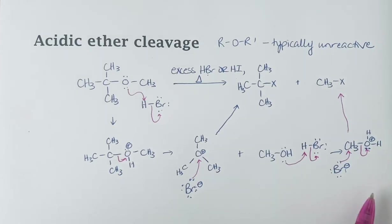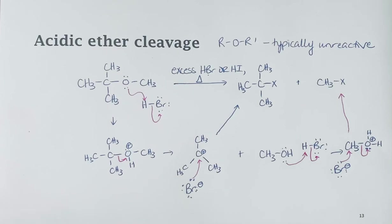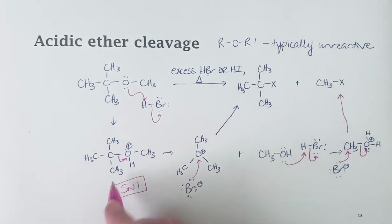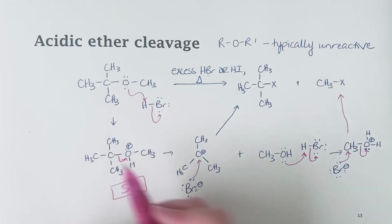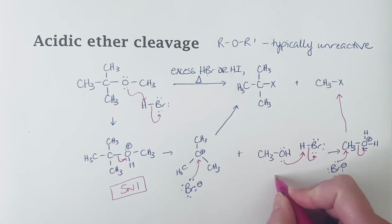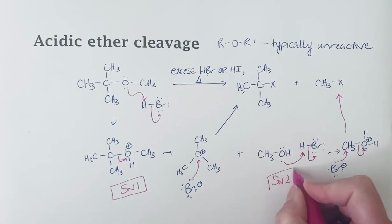So the mechanism can take place, this acidic ether cleavage could be either SN1. So we see this first pathway as SN1, and that's because we have a tertiary carbon. Or if we have a primary or methyl carbon, then we can end up with an SN2 pathway, which is what we see here.